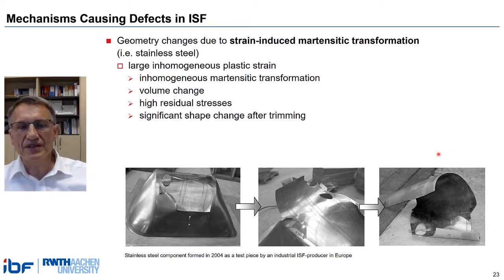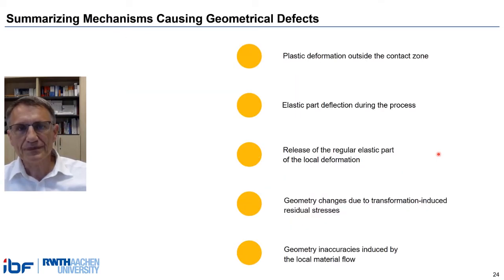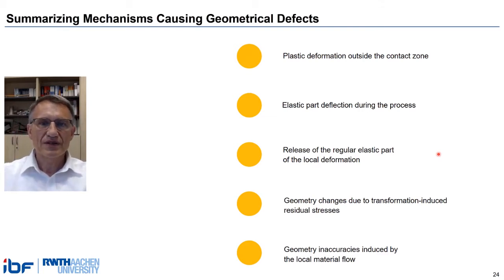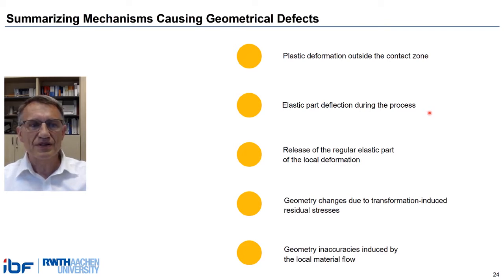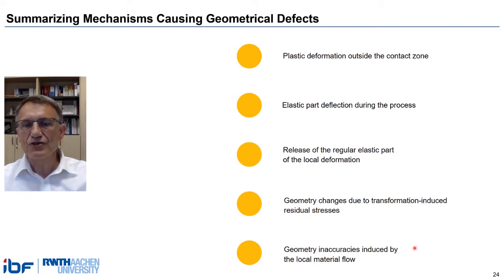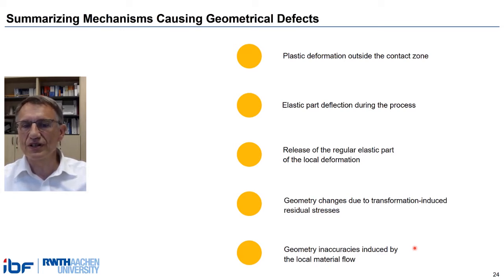The list of mechanisms causing defects in ISF presented so far may not yet be complete, but I think we have covered some of the most important ones within our focus area. There is plastic deformation outside the contact zone, elastic part deflection during the process, geometry changes due to transformation-induced phase changes, and what is often called springback — meaning the release of the elastic part of local deformation. And there are geometric inaccuracies induced by inhomogeneous local material flow, like excessive in-plane stretching or convex or concave curvature, as we have seen in the flat specimen. These are complicated interrelations, composed of different sub-mechanisms which we did not discuss today, and I am afraid we have not yet understood most of them.